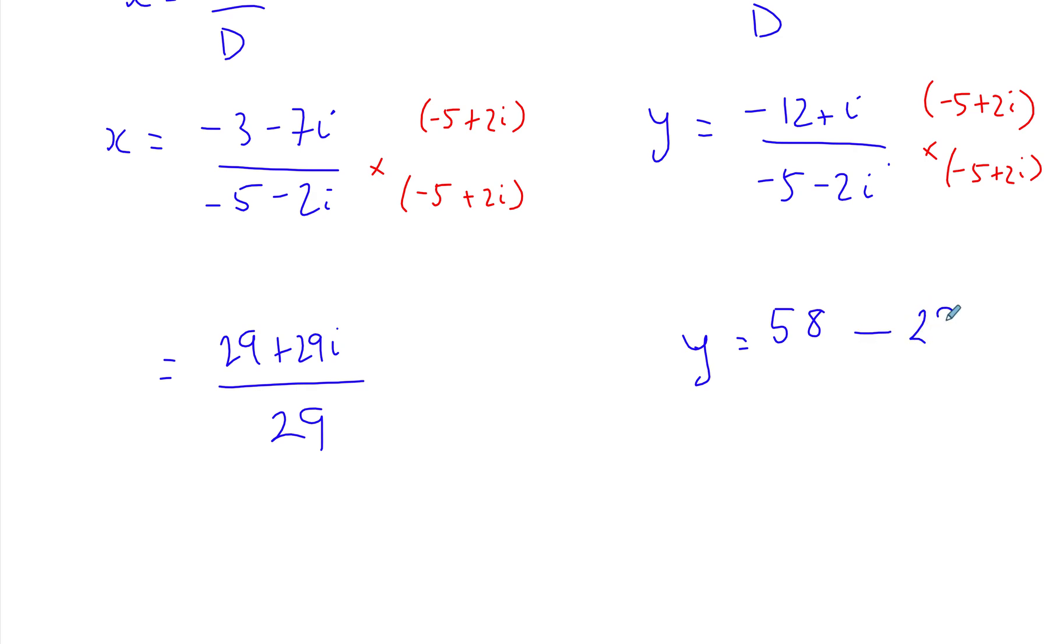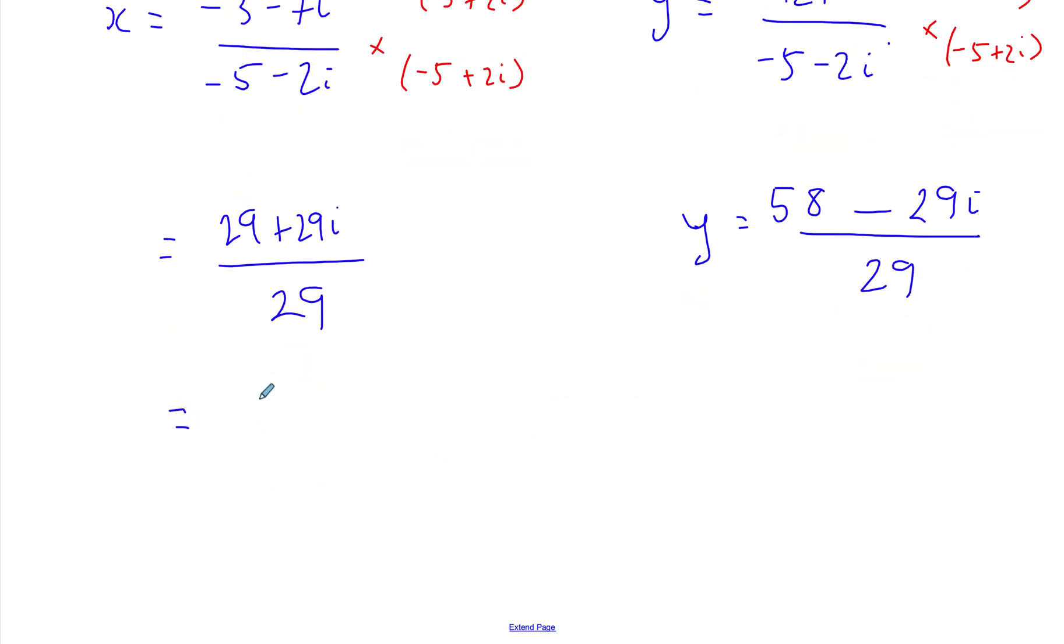So this is going to simplify to 1 + i, and this is going to simplify to 2 - i. You can use the GDC to confirm your results.